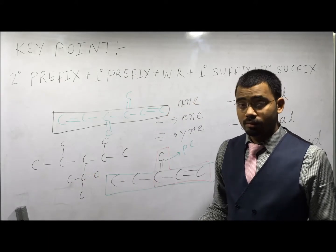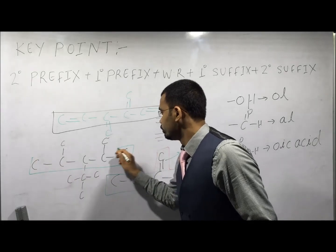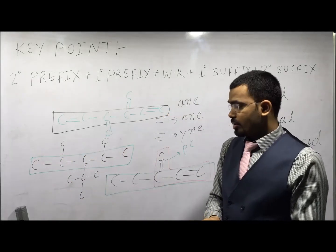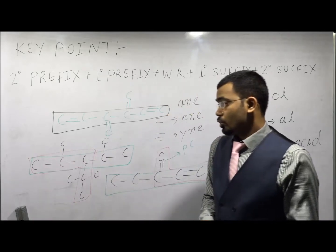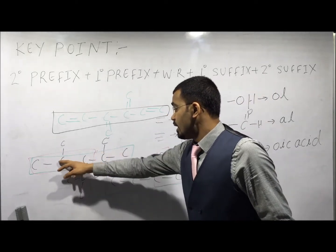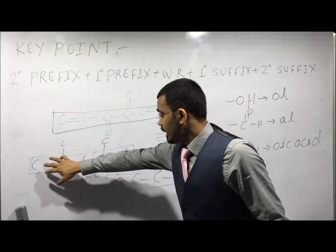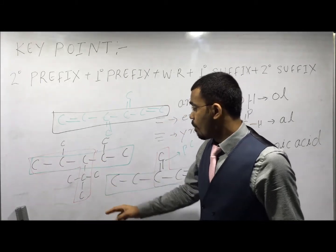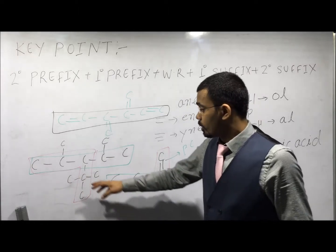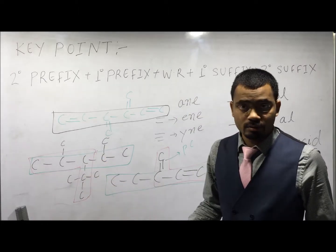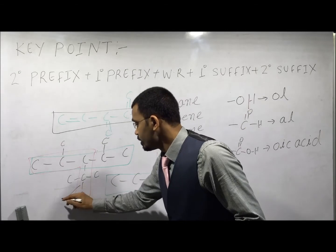In the given example we have two choices. Looking at one chain, it has how many substituents? One, two, three. But in the nonlinear chain, how many branches? One, two, three, and four branches. So the nonlinear chain has more substituents; therefore this chain will be the parent chain.